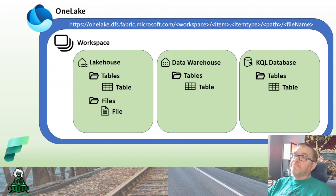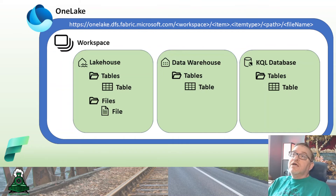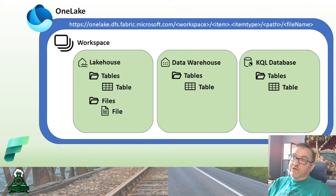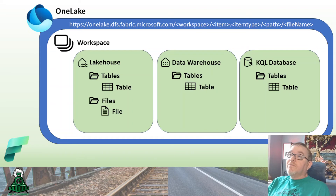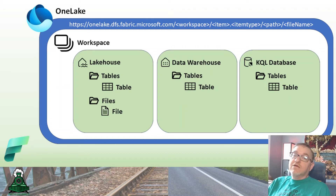As you look at One Lake, you can look at the link at the top of this visual. You have your One Lake environment, your workspace, the item, and the type of item. So if you had a lake house item, you would be tagged as a lake house type, the path underneath that, and the file name. These are the ways that you will be able to interact with this data using APIs moving forward.